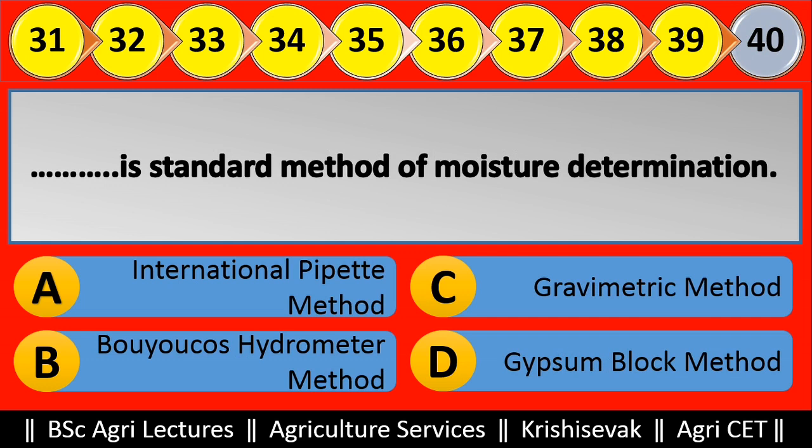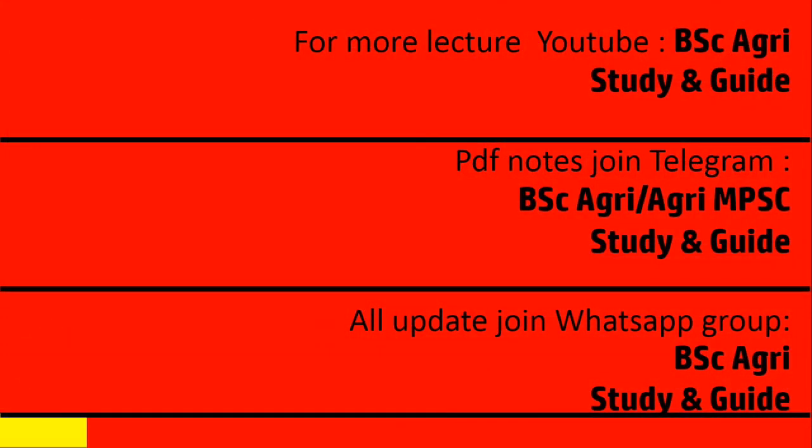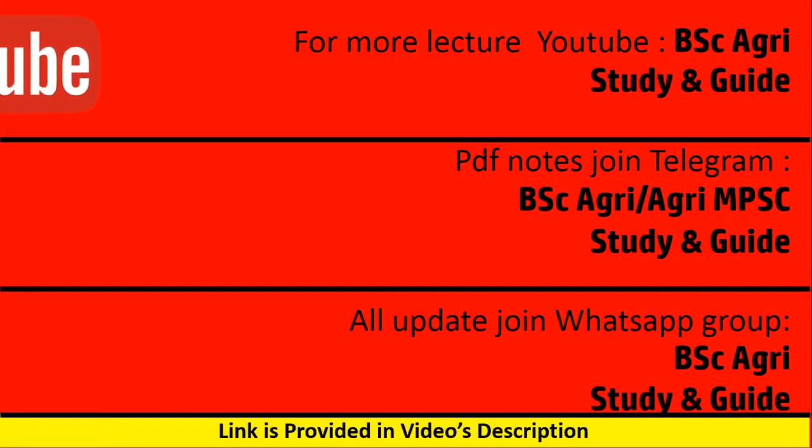Question 40: Blank is the standard method of moisture determination. Options are: (a) International pipette method, (b) Bouyoucos hydrometer method, (c) Gravimetric method, (d) Gypsum block method. Right answer is Gravimetric method, option C.